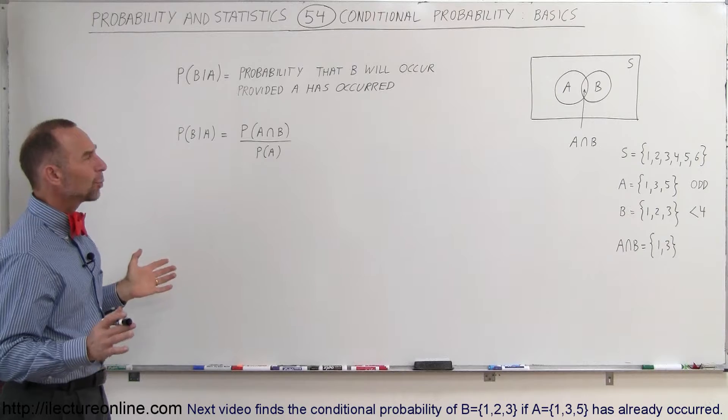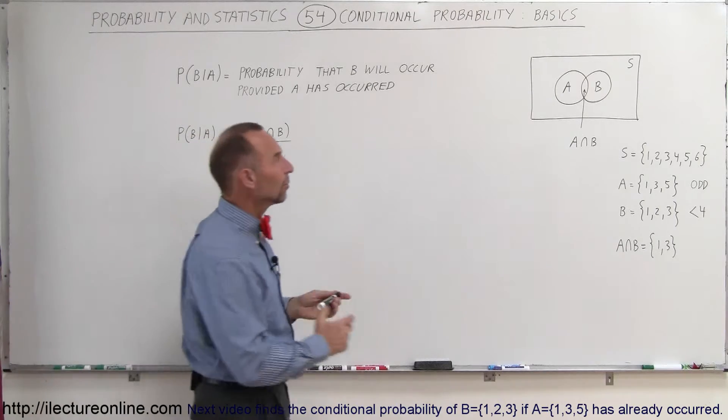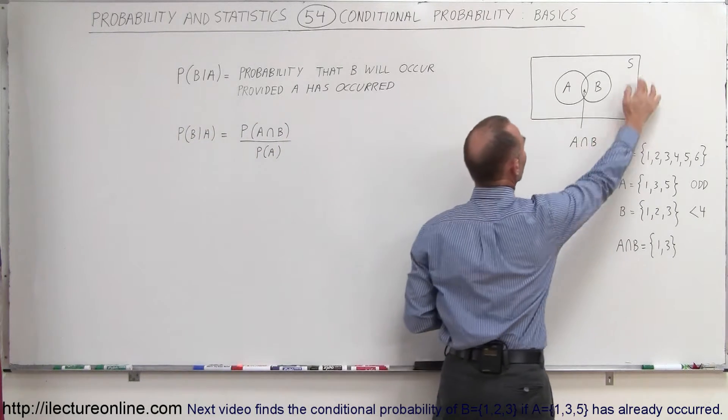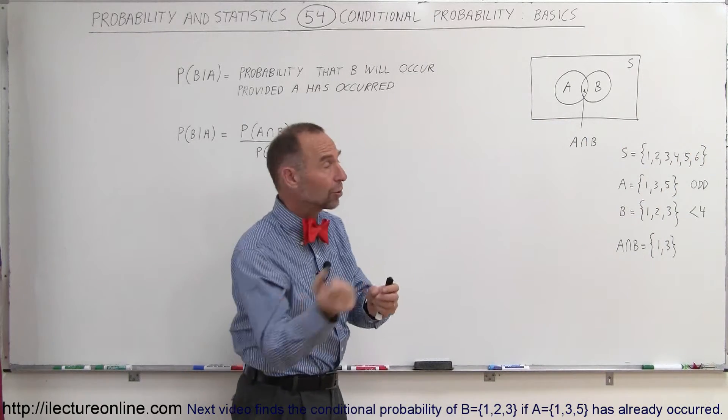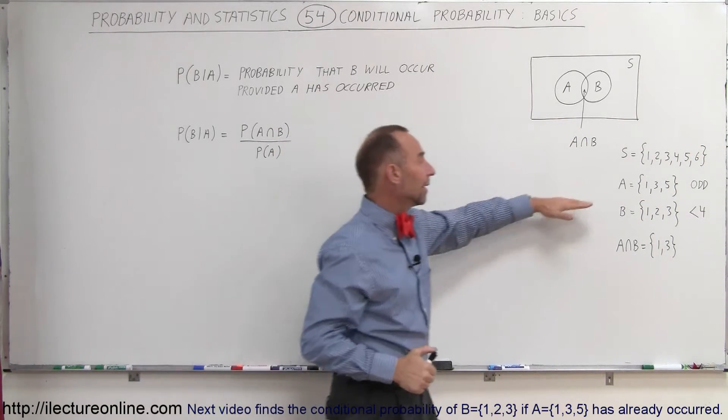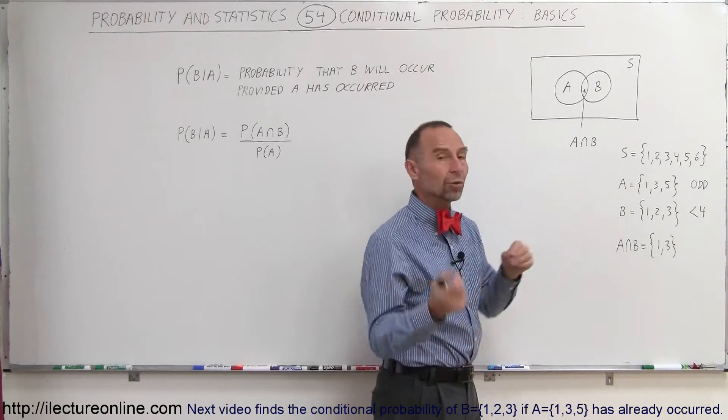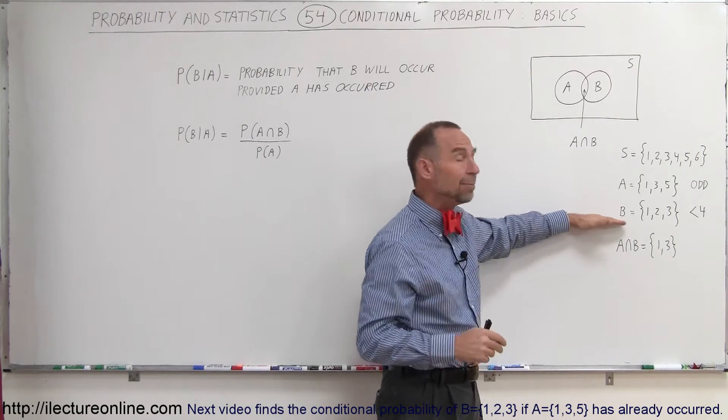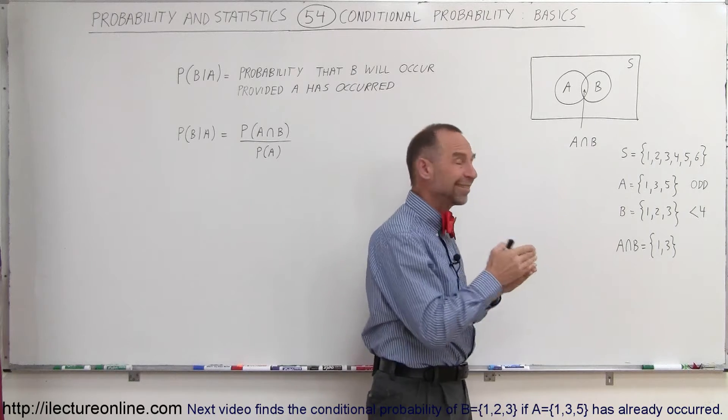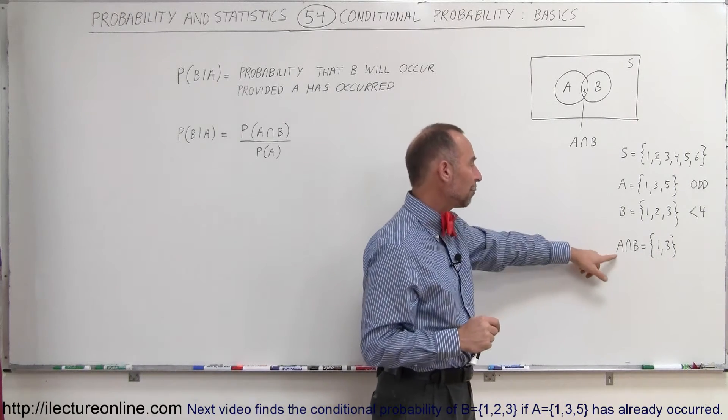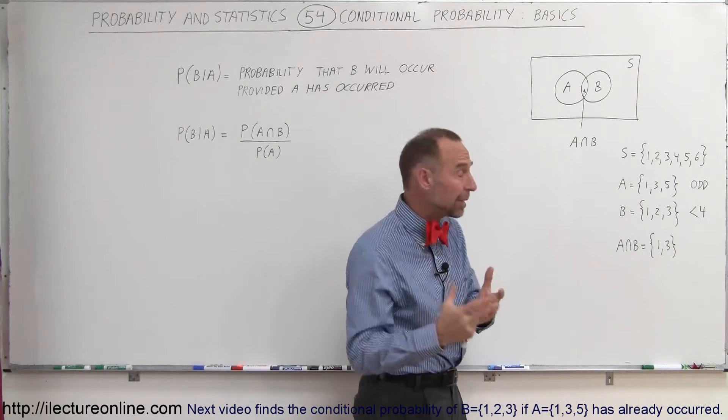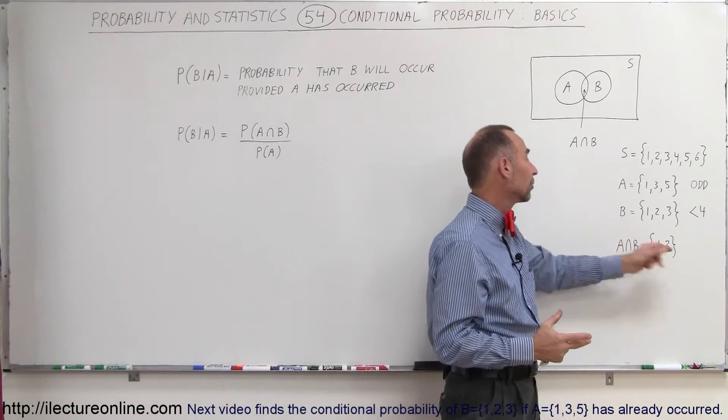So what does that mean? If we take a look at this, we have a sample space and let's assume that the sample space is all the different numbers you can toss when you toss a die. Let A be the event where the result is an odd number: 1, 3, or 5. And B be the event where the number is less than 4, therefore 1, 2, or 3. We then have what we call an intersection between A and B, and those numbers are 1 and 3.